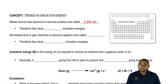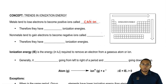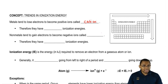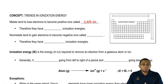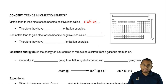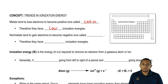Ionization energy is just the energy it takes to remove an electron. If you lose electrons very easily, you're not going to need a lot of energy to remove them, because metals are just giving them away for free. Therefore, metals have low ionization energies.